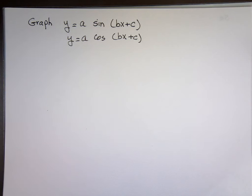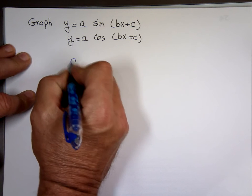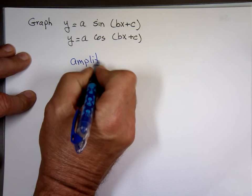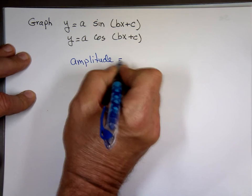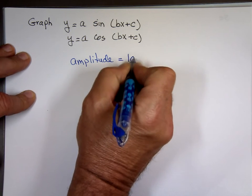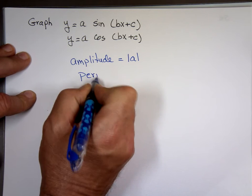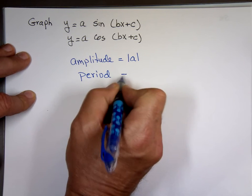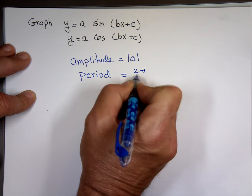Do you know what A and B do? Again, quick refresher. Amplitude is the absolute value of A. The period is controlled by B — it's 2π over B.